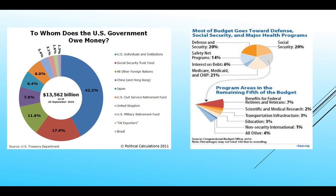Who does the government owe money to? Most people think it's China, but that's really not the case. About 42% is owed to ourselves in the form of government bonds, Medicare, and Medicaid. China and Japan are only 7% and 6% respectively. Looking at where the money is being spent: defense and security is about 20%, Medicare and Medicaid is 21%, and Social Security is 20%.